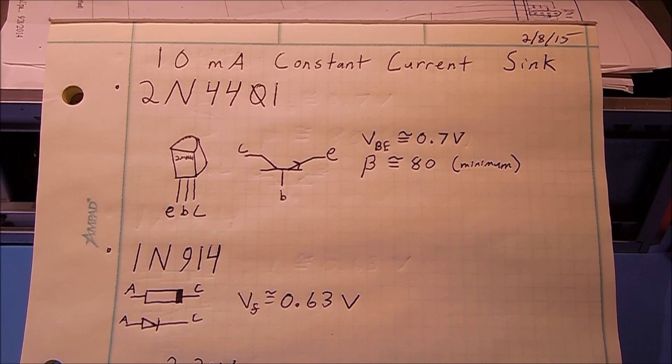Today I'm going to show you a simple circuit that you can use to generate a constant current. The main components of this circuit are an NPN transistor and a handful of diodes.